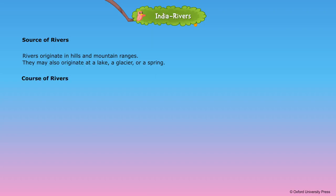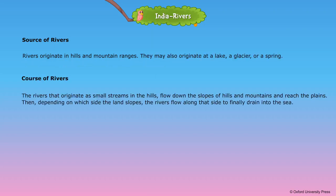Course of Rivers. The rivers that originate as small streams in the hills flow down the slopes of hills and mountains and reach the plains. Then, depending on which side the land slopes, the rivers flow along that side to finally drain into the sea.